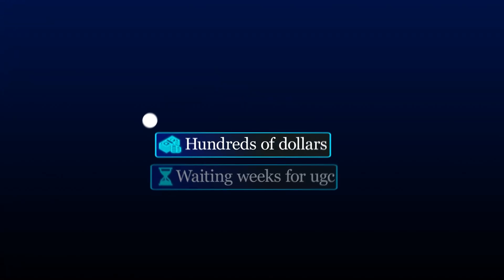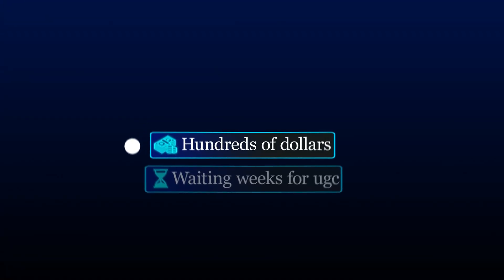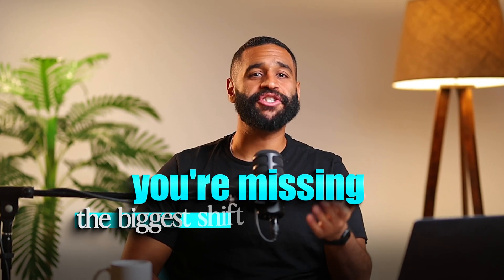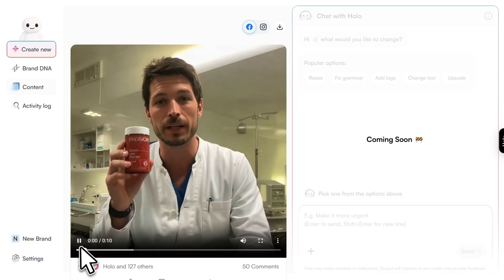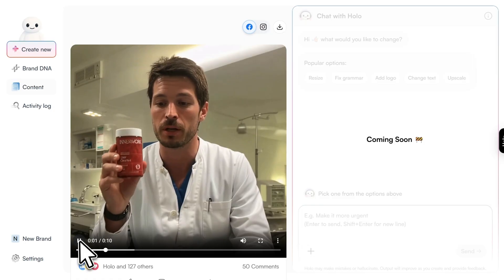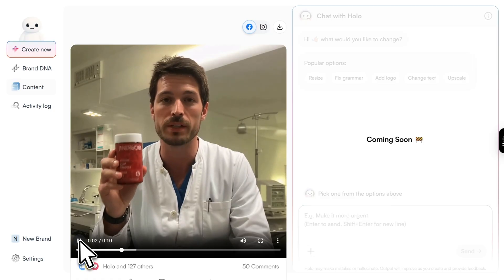If you're still spending hundreds of dollars per creator and waiting weeks for UGC content, you're missing the biggest shift in ad creation right now. I just generated this entire ad in under five minutes using nothing but AI, and it looks completely real.